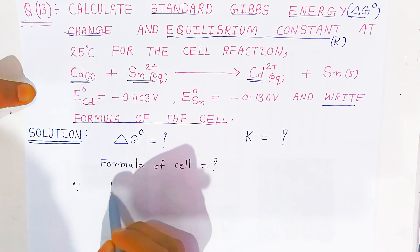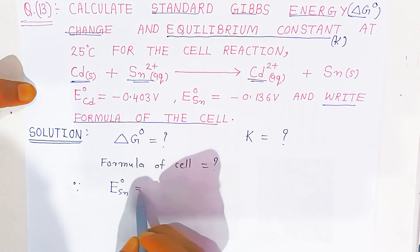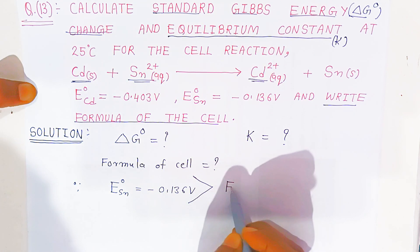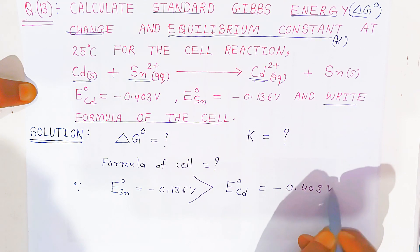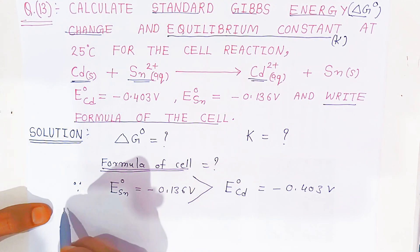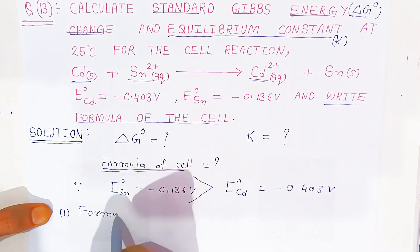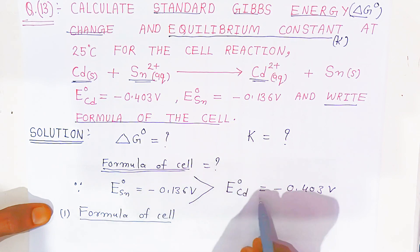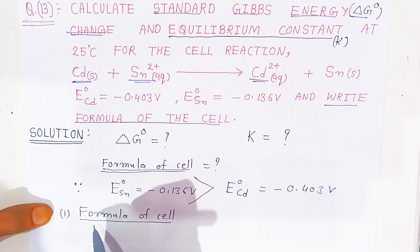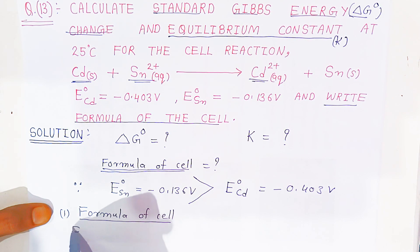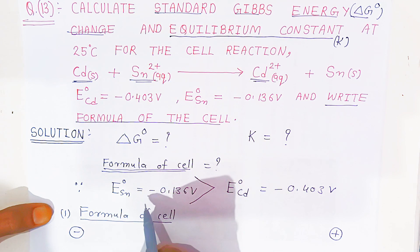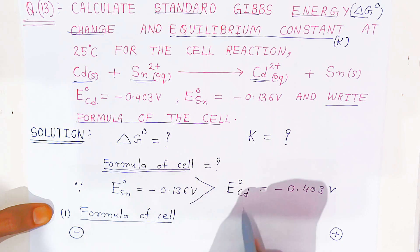The standard stannous potential, minus 0.136 volt, is greater than the standard cadmium potential, minus 0.403 volt. The left-hand side is always the anode, written with a minus sign, and the right-hand side is the cathode, written with a plus sign. The electrode with the greater potential is placed at the cathode, and the lesser potential at the anode.